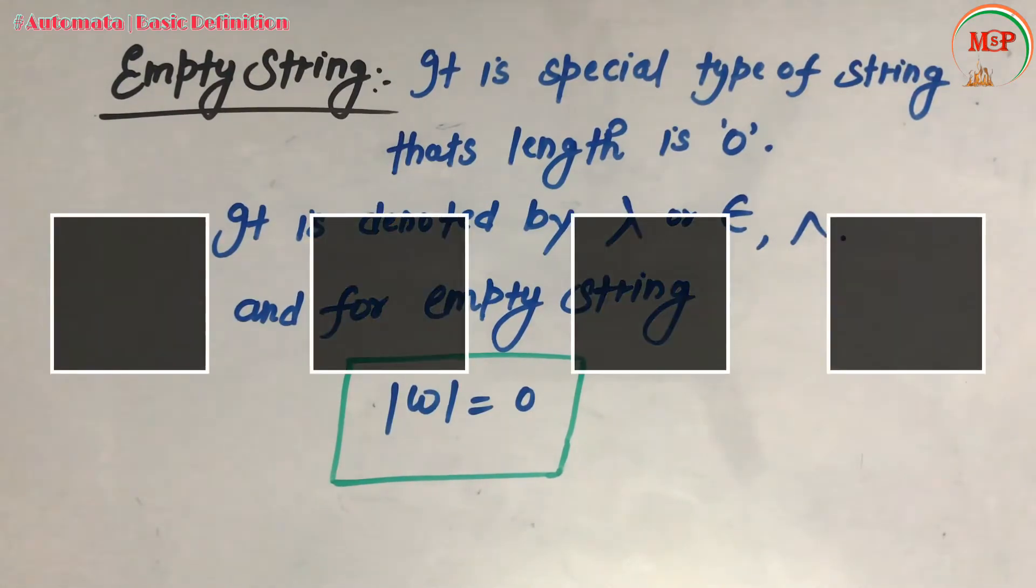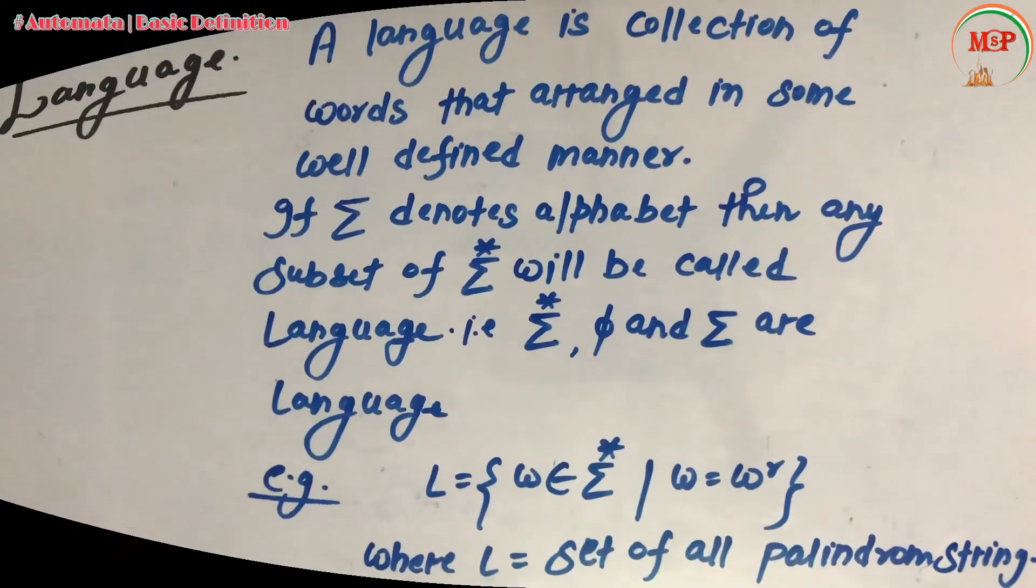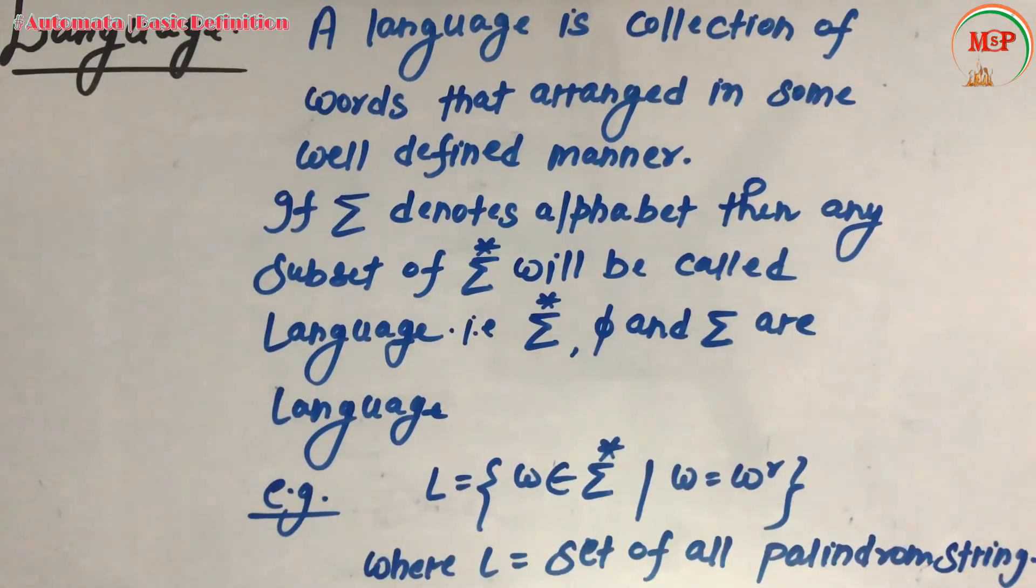The next definition is language. A language is a collection of words that are arranged in some well-defined manner. If Sigma denotes an alphabet, then any subset of Sigma* will be called language. That is, Sigma*, phi, and Sigma are also a language. Let's take an example: L = {w belongs to Sigma* such that w = w^r}, where w is the string and w^r is the reverse of string. If both are same, then we can say L is equal to set of all palindrome strings.